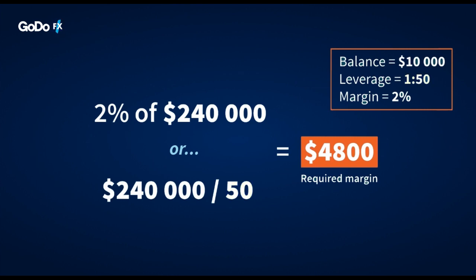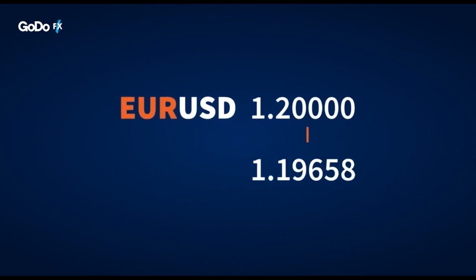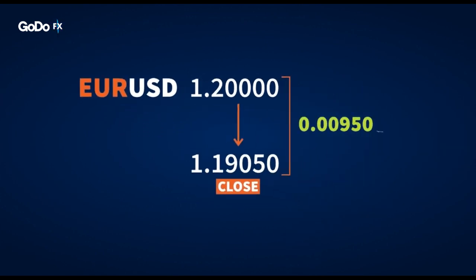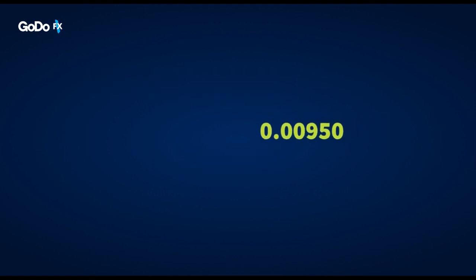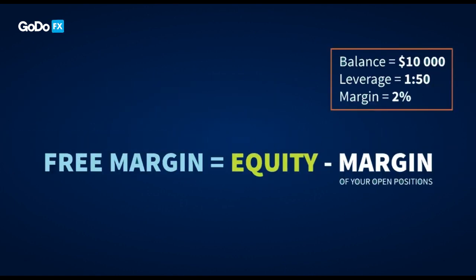If after entering this trade the price of EURUSD fell to 1.1905, he incurred a loss of 0.0095, which is equivalent to a certain dollar amount. In this case, the trader's free margin would be calculated accordingly.